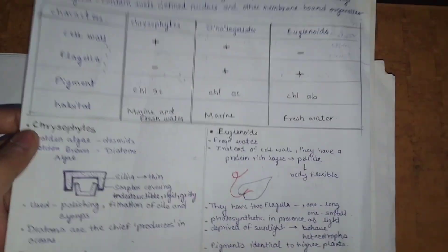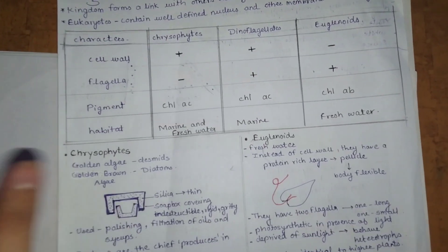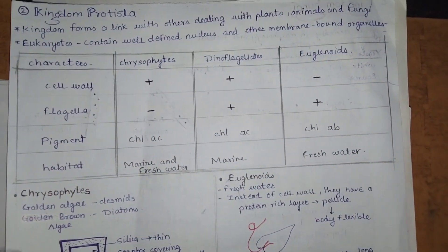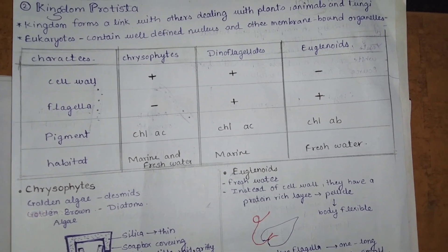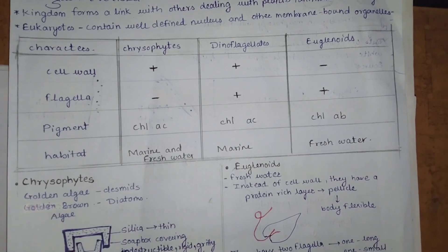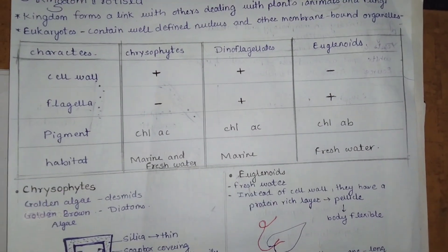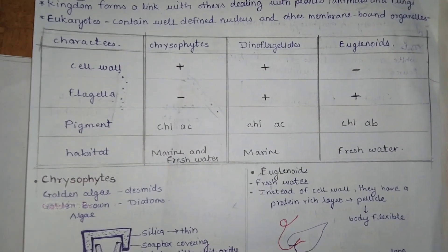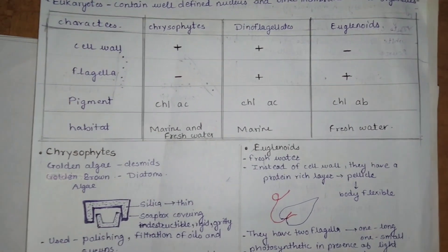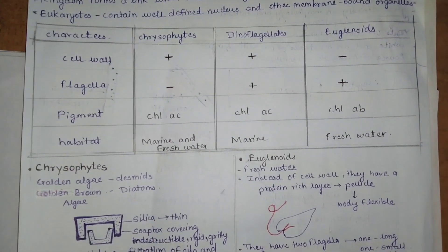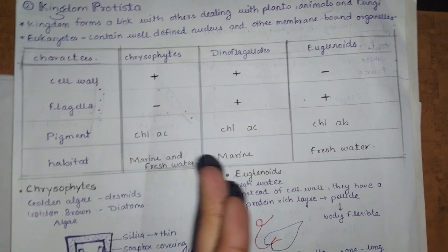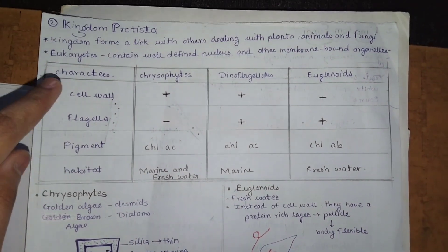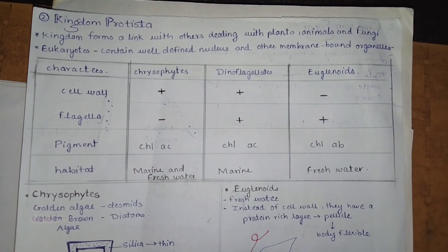Moving forward, we will first study Chrysophytes, Dinoflagellates, and Euglenoids — what they are and what is present in them. We will study Slime Moulds and Protozoans later. For the first three, we will look at cell wall, flagellum, pigment, and habitat.